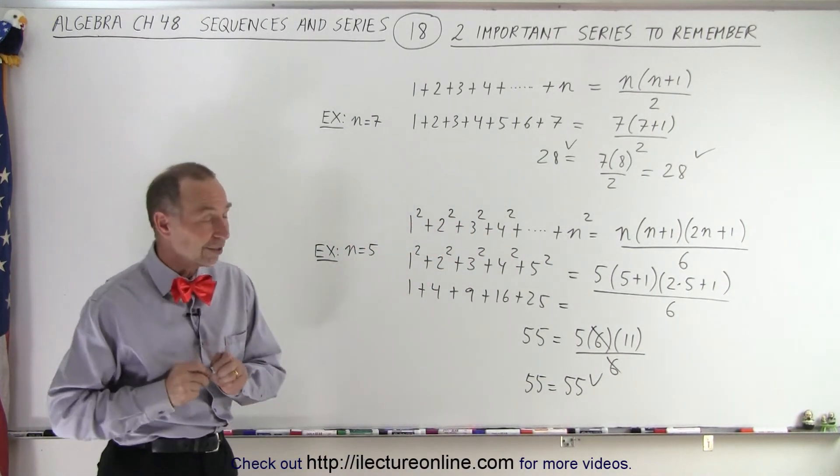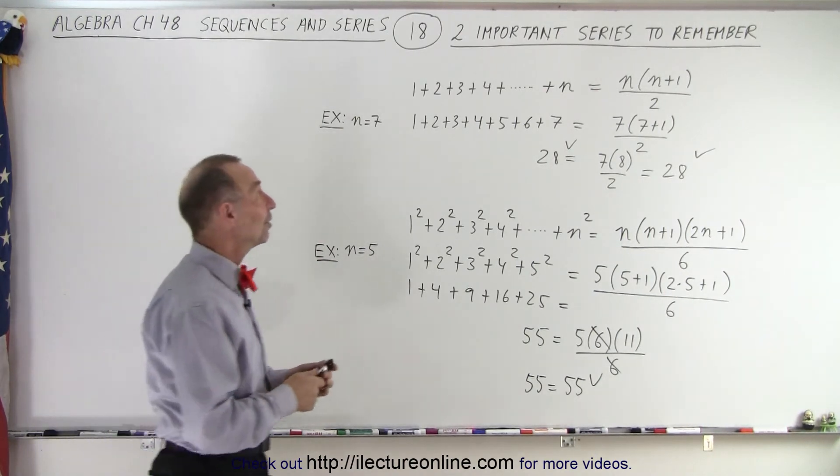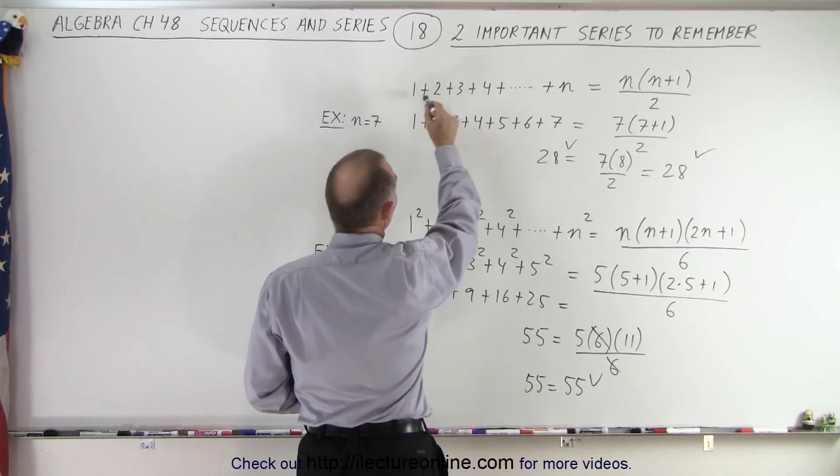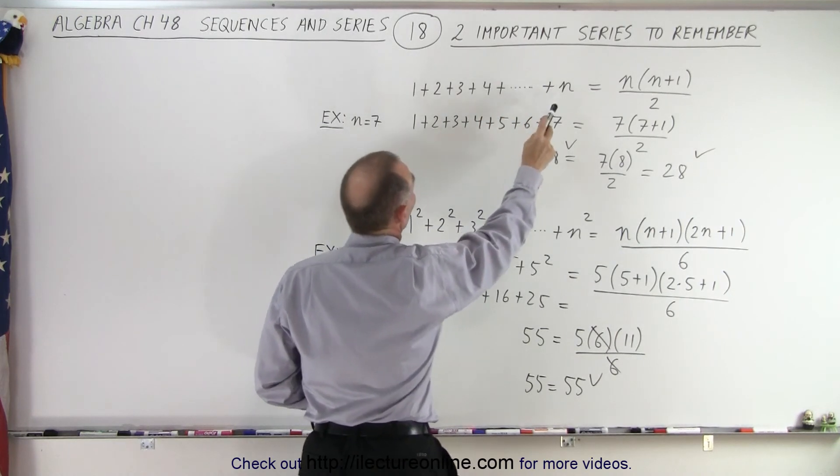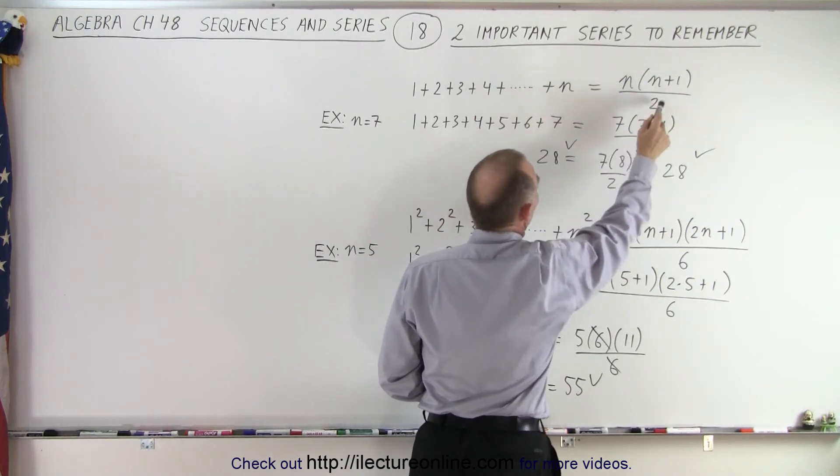And you'll find out, try it, it will work for any value for n. So now, whenever you see a series where it looks like this: 1 plus 2 plus 3 plus 4, and so forth, all the way up to n, this could be replaced by n times n plus 1 over 2.